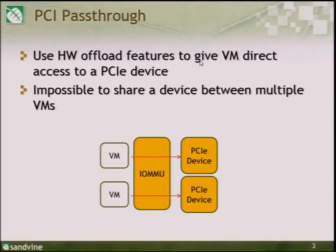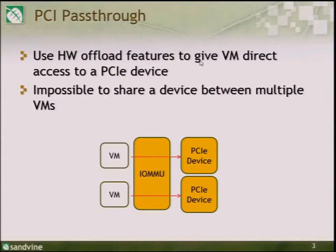But there are several disadvantages. The biggest one is that it doesn't scale — you have to give a VM complete control of the PCI device. So if you want four VMs, you need four NICs; if you want eight VMs, you need eight NICs in your chassis. When you're doing virtualization, you want to share resources between all your VMs, but with pass-through you're not sharing, so you haven't really gotten the full benefits of virtualization.